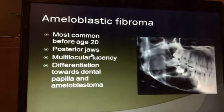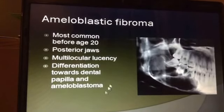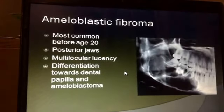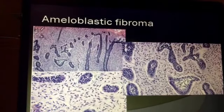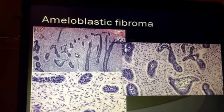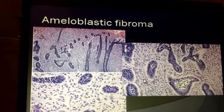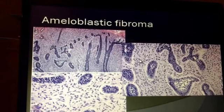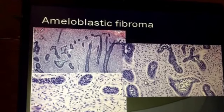The ameloblastic fibroma, in contrast, doesn't have that dense fibrous tissue. It is a fairly early-onset lesion that seems to be proliferating towards the dental papillae and ameloblastoma. Under the microscope you see a mixture of epithelial and mesenchymal elements with clearly ameloblastic type of tissue. The stroma is bland, fibromatous, loose, and myxoid without significant proliferative activity or atypia.